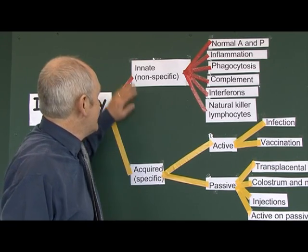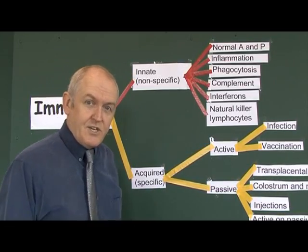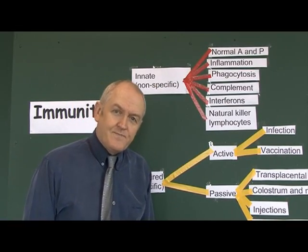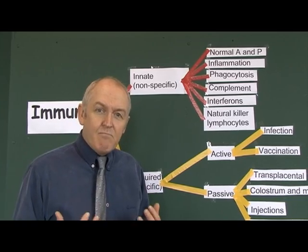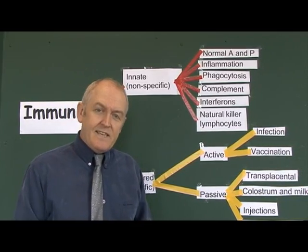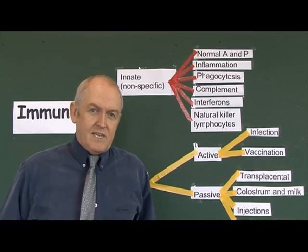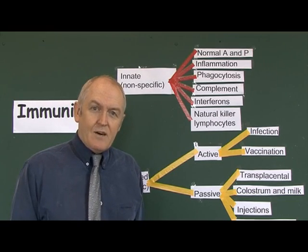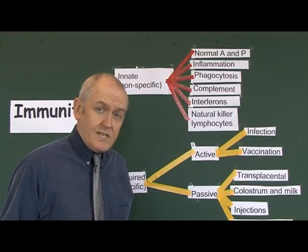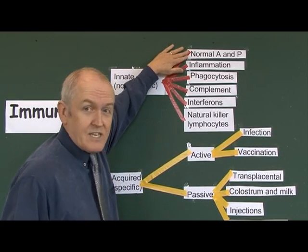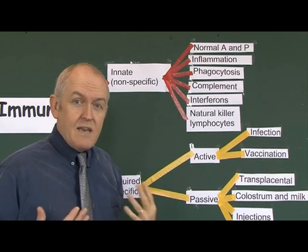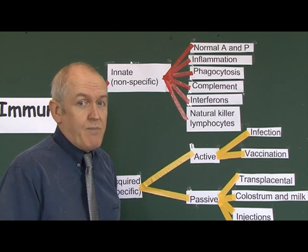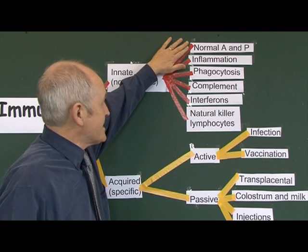So how is this innate, non-specific immunity achieved? The first component is normal anatomy and physiology — things that are inborn. For example, if the skin is intact, that's going to keep a lot of organisms out. If the mucous membranes are intact, that keeps most organisms out as well. These are physical and chemical barriers that are there as a result of normal anatomy and physiology.